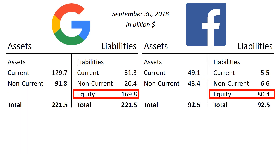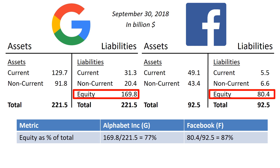Bottom right of the balance sheet: Equity. On the balance sheet, the equity balance is stated at book value. The market value of the equity in these companies is far higher than that. Equity as a percentage of the balance sheet total is extremely high for both companies — 77% for Alphabet Inc., 87% for Facebook. Given that Alphabet Inc. has long-term debt of $4 billion and Facebook none at all, the debt-to-equity ratio is not a meaningful metric in this comparison.